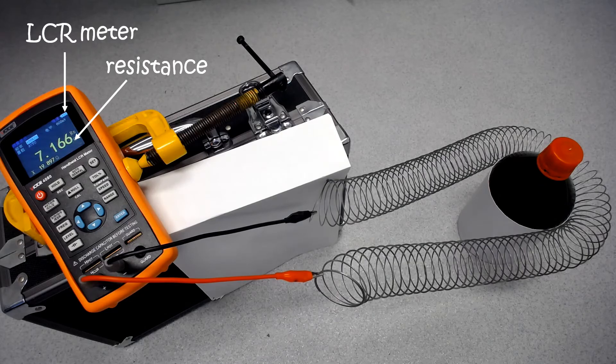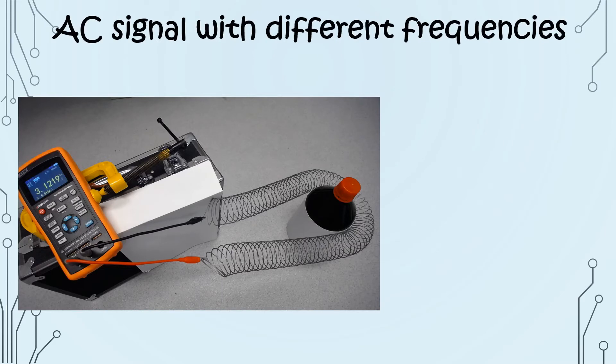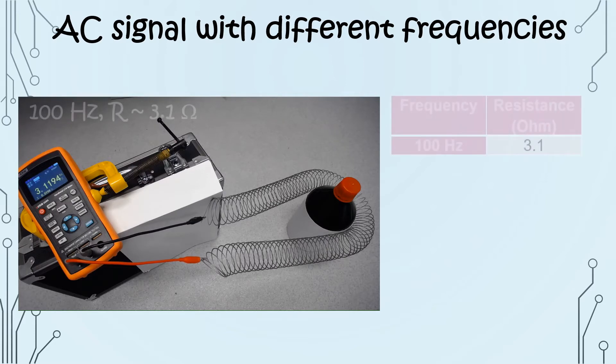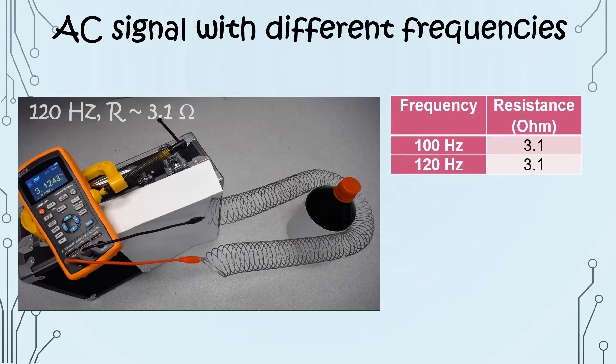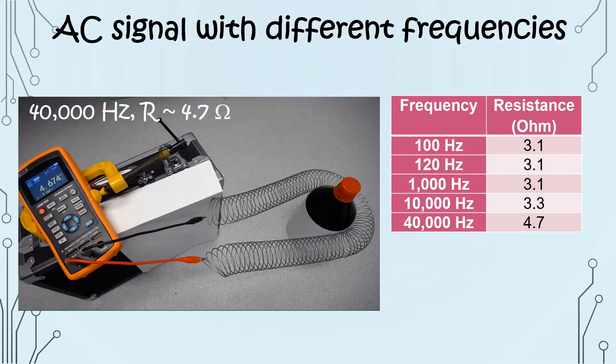So what's going on here? In the first case, I was actually applying an alternating current through the wire, and I was changing the frequency of it. When the applied frequency is 100 Hz, the resistance is 3.1 ohm. But when I increase the frequency, resistance increases. So how comes?